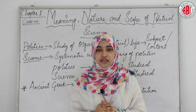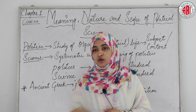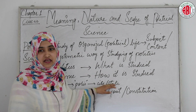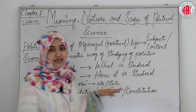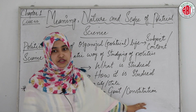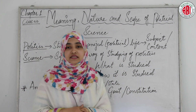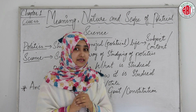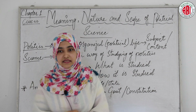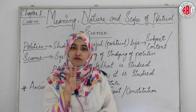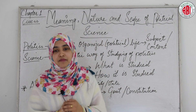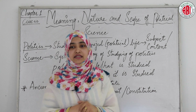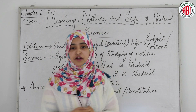The word 'politics' is derived from the ancient Greek word 'polis', which defines the state or the city. And the word 'politia' means the government or the constitution. So politics came to mean the study of the state, government and the institutions of the state. In the classical Greek sense, politics and political science covered both aspects of theoretical understanding and the practical affairs of the state.